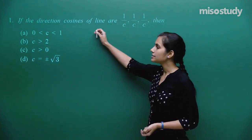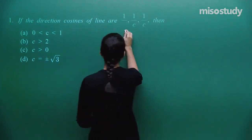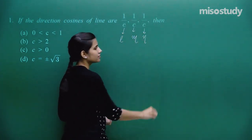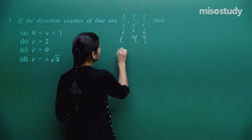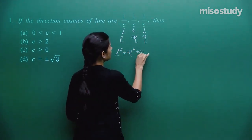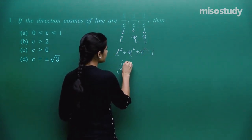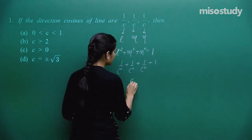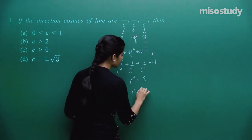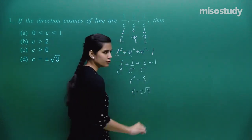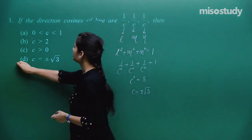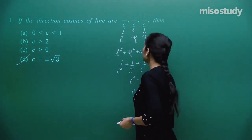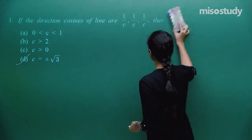The only concept needed here is direction cosines. If l, m, n are direction cosines, then l² + m² + n² = 1. That means 1/c² + 1/c² + 1/c² = 1, which gives c² = 3, so c = ±√3. So c must equal plus or minus root 3 for 1/c, 1/c, 1/c to be direction cosines.